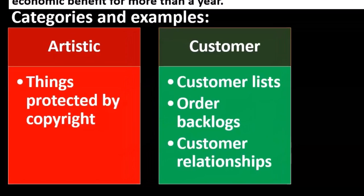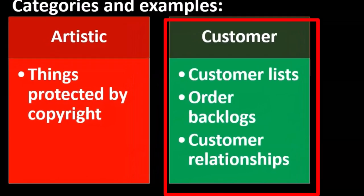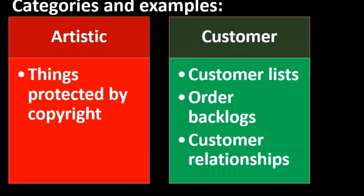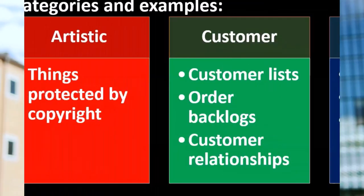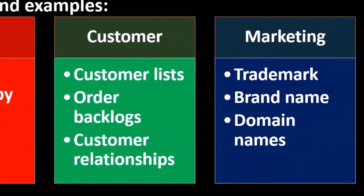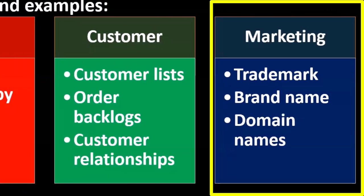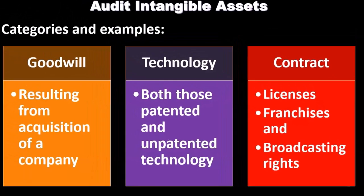Customer-related intangibles include things like lists, order backlogs, and customer relations. These are types of assets that are not tangible, so we wouldn't typically think of them when listing assets and liabilities, but they clearly have value. Marketing-related intangibles include things like trademarks, brand names, and domain names — all types of intangible assets related to marketing.